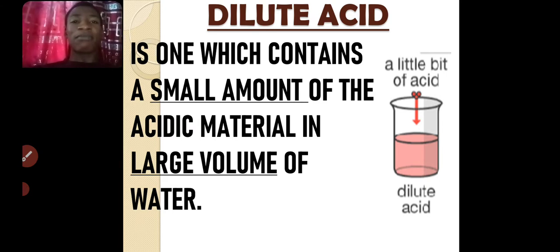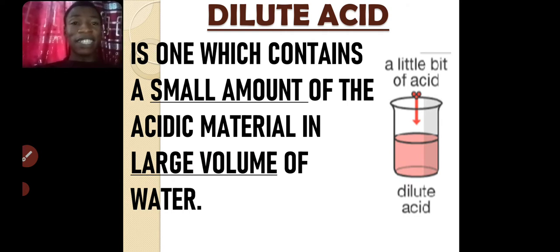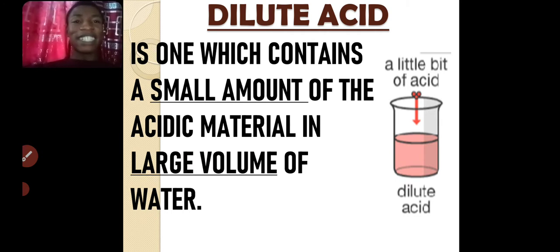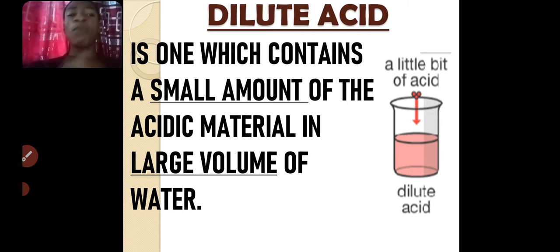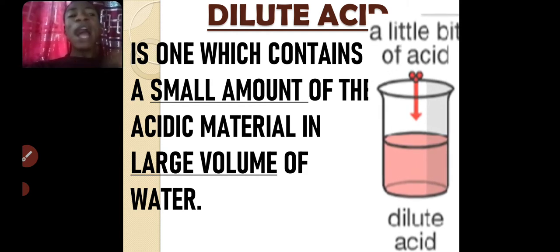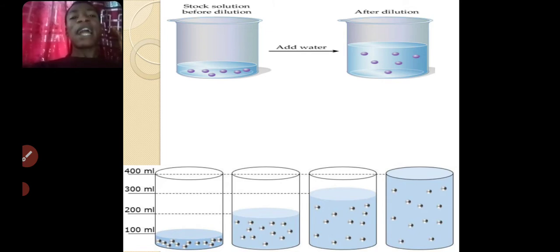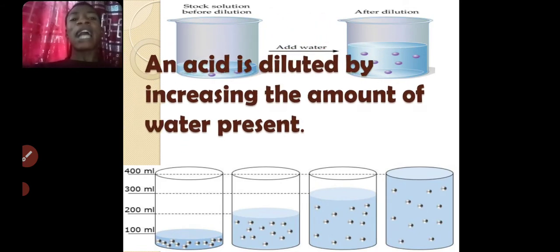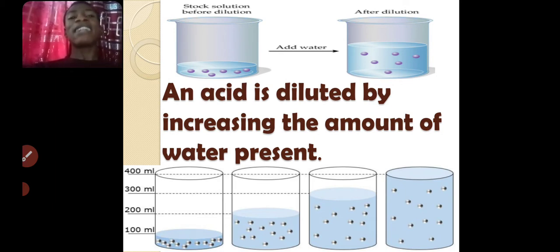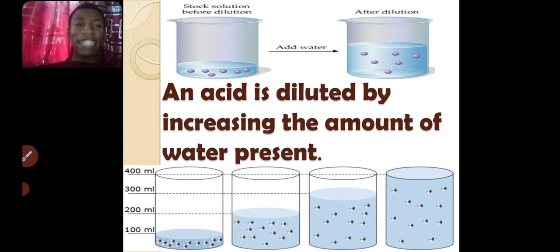By adding water to that drink, you are diluting it and the drink becomes less sweet because you have diluted it. A dilute acid is one which contains small amount of the acidic material in a large volume of water. You dilute acid by increasing the amount of water present in the acid.